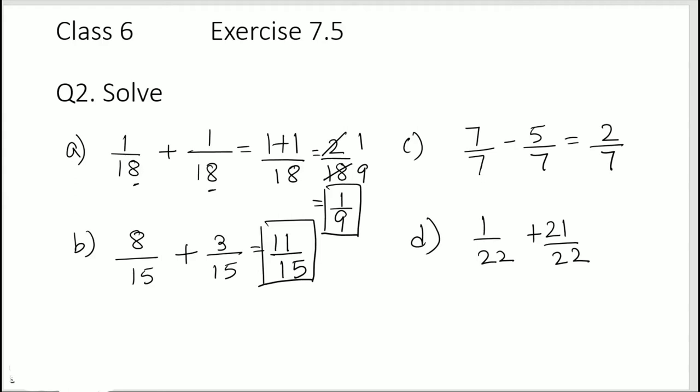D, 1 over 22 plus 21 over 22. So same denominators 22. So add up the numerators. 1 plus 21 is 22 over 22. Now we have the same number in the numerator and denominator, so that means we can write this as 1. Because 22 1s are 22 and 22 1s are 22. So when we have the same number in the numerator and denominator, we can also write it as 1.